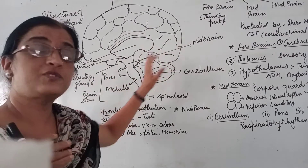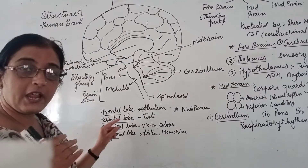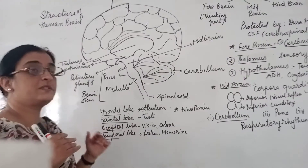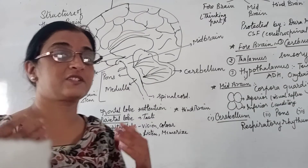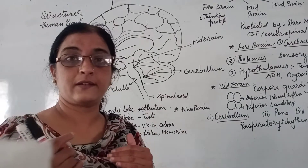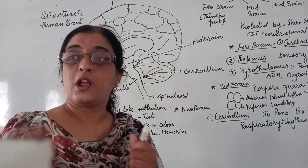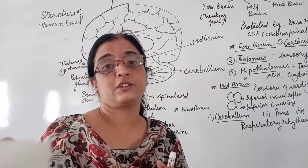After the layers, we will see how many parts are present in the brain. There are three parts of the brain: forebrain, midbrain, and hindbrain.